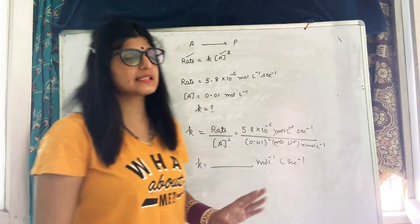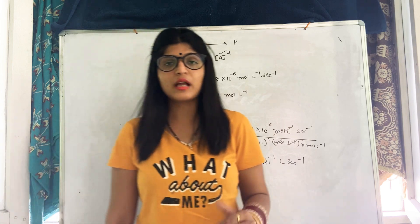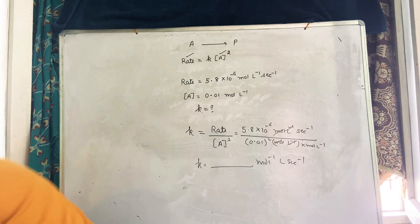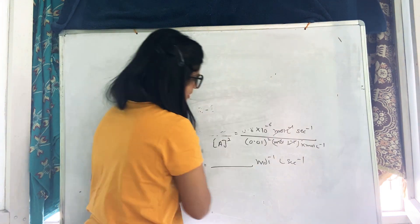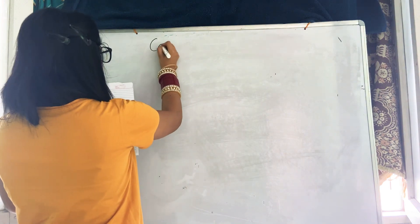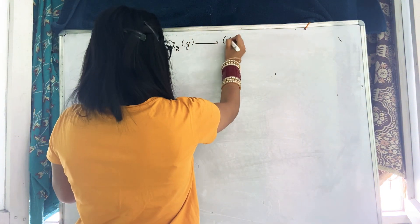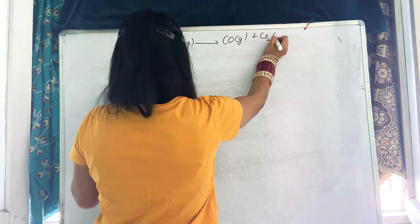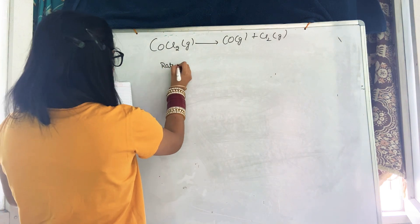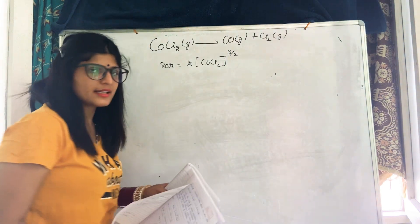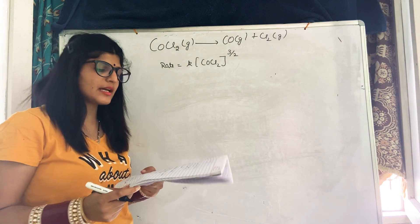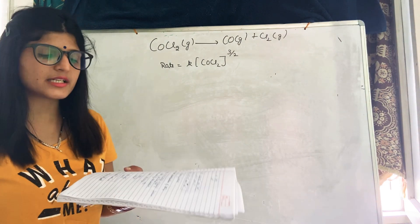This was question number 7 of numerical section 2. Now we will discuss question number 8. The reaction given is COCl₂ gaseous decomposing to CO gaseous plus Cl₂ gaseous, and it follows a rate law of order 3/2. What are the units of the rate constant?